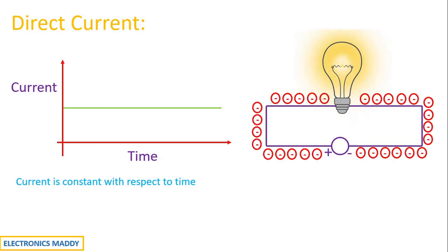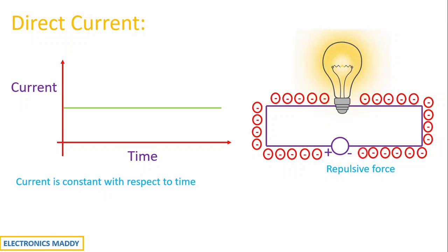Let us consider a DC battery connected to a light load through conductors, indicated here in purple. These conductors contain electrons. Since the negative terminal of the battery is connected to the conductor, there is a repulsive force produced with respect to this electron, and this electron gains sufficient energy and hits the adjacent electron.